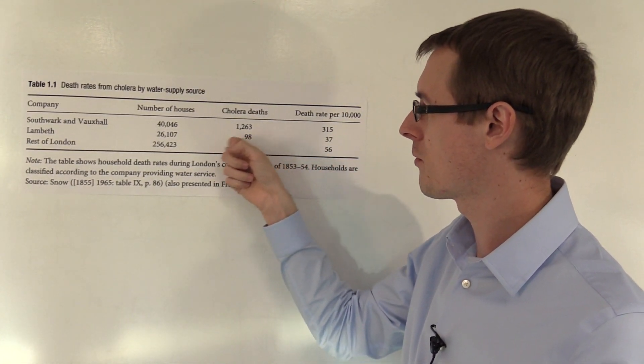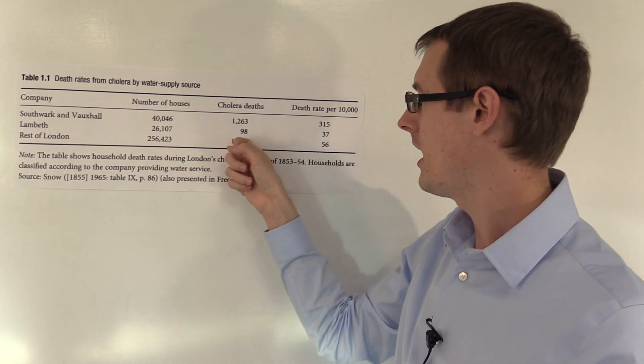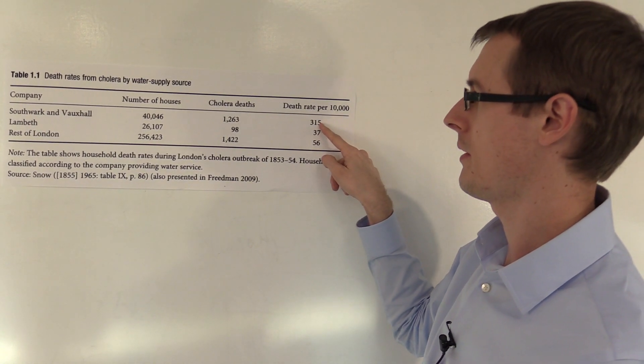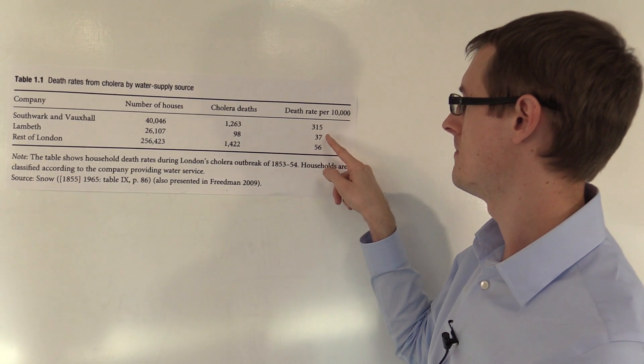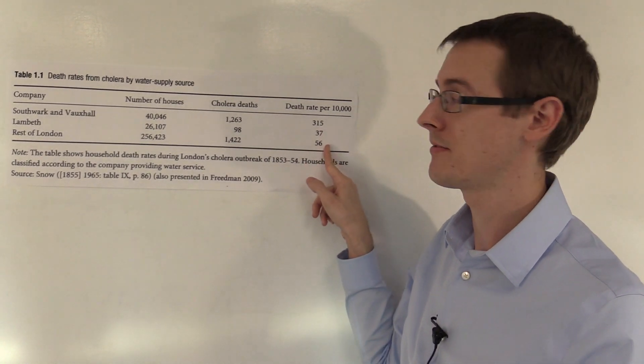If you look at through the rest of London, which was provided by water from other companies, other people died there, but the rate wasn't nearly as bad as the people who were getting water from Southwark and Vauxhall. And for Lambeth, they were much better, on average, than the rest of London.